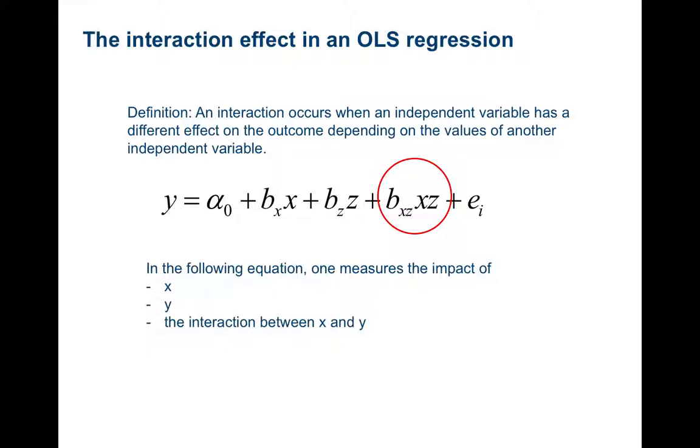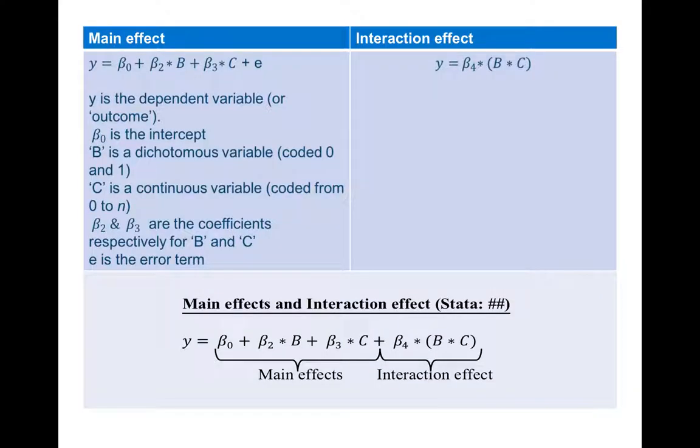It interacts X and Z and provides a third coefficient; in this case, the coefficient beta XZ. Therefore, the formula may be understood as containing, on the one hand, a main effect, and on the other hand, an interaction effect between two or more terms of the main effect.